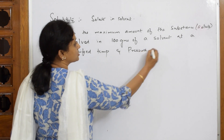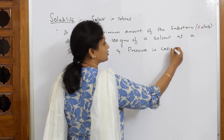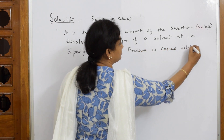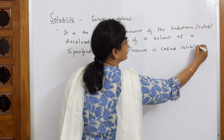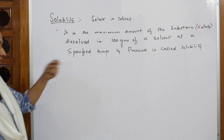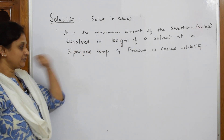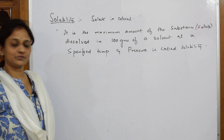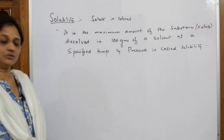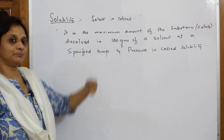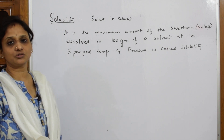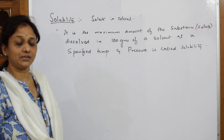That is called solubility. Simple — we are picking up 100 grams of a solvent and the maximum amount of solute which can completely dissolve in that solvent is called solubility.